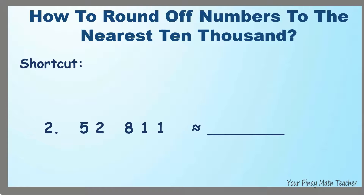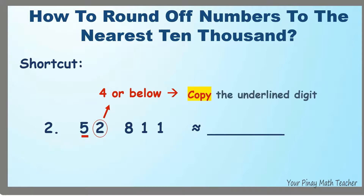Number 2: 52,811. The 10,000's digit is 5 — underline it. Look at the digit to its right. If it is 4 or below, copy the underlined digit. Since it is 2, copy 5. The rest, including the encircled number, become zeros. So, 52,811 is rounded off to 50,000.